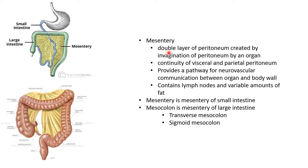Mesentery is a double layer of peritoneum created by invagination of peritoneum by an organ. It is a continuity of visceral and parietal peritoneum. Mesentery provides a pathway for neurovascular communication between an organ and body wall. It contains lymph nodes and variable amounts of fat.